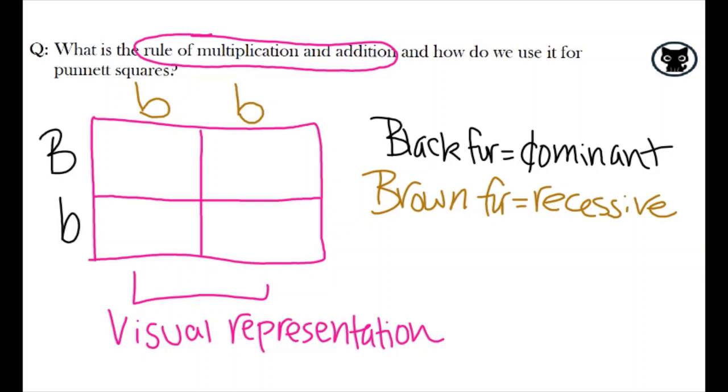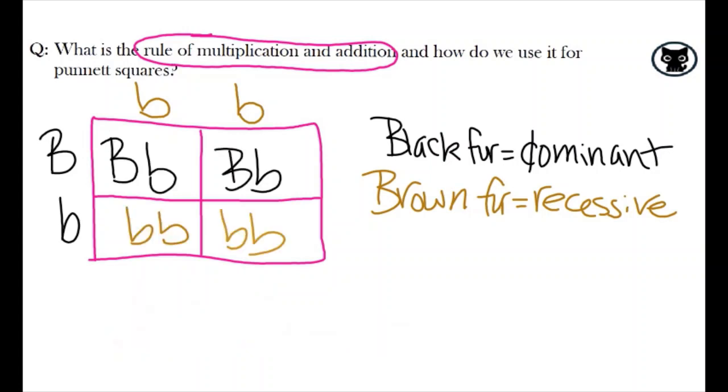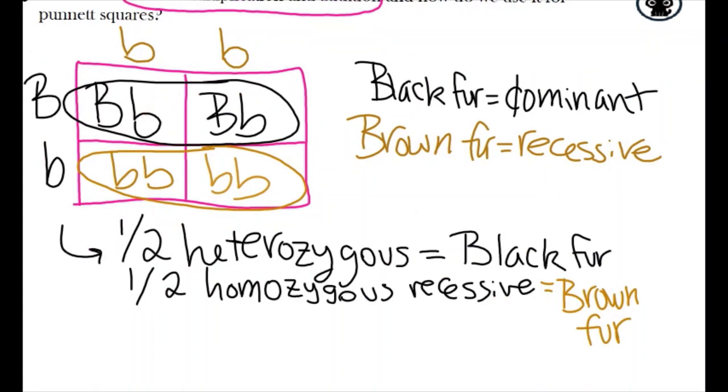Let's say we cross it or mate it with a heterozygous dog, meaning that it has an uppercase B, lowercase b. This Punnett square that we set up lets us see the probability of their children having certain genotypes and phenotypes, leading to half of the puppies being heterozygous and half homozygous recessive, or half of the puppies with black fur and half with brown.